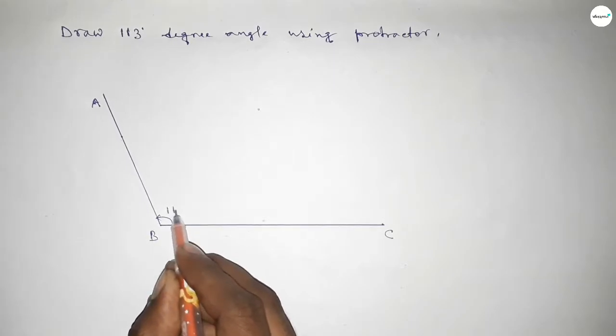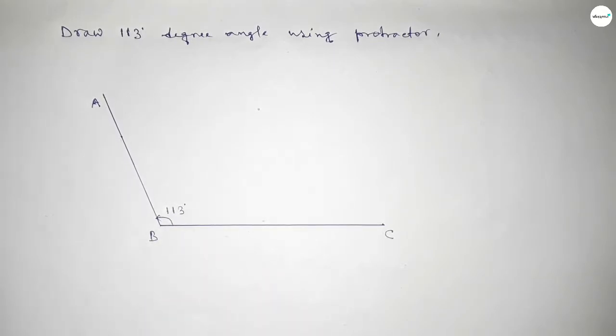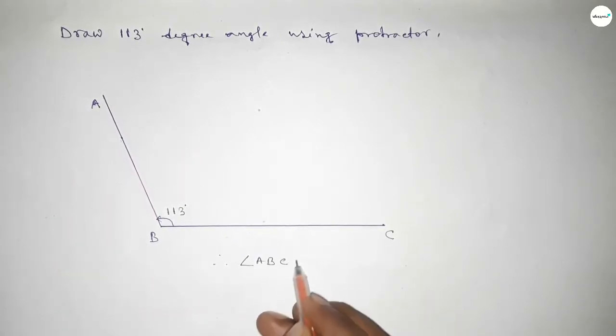This is 113 degree angle. So therefore angle ABC, this is angle ABC equal to 113 degree angle. That's all, thanks for watching. If this video is helpful to you, then please share it with your friends.